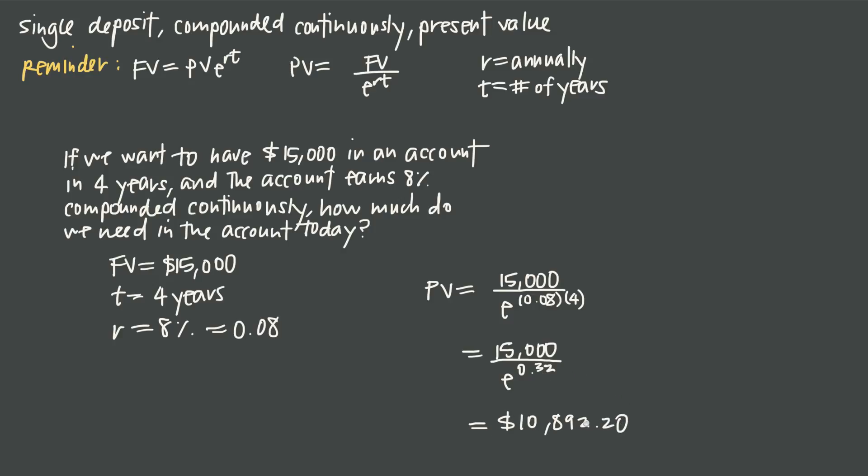Remember since this answer is in terms of dollars we can round to the nearest cents. So what this tells us is that we need to have $10,892.20 in the account today if we want to have $15,000 in four years.